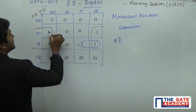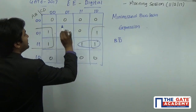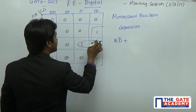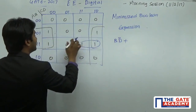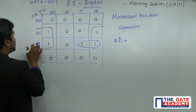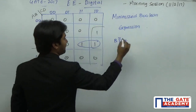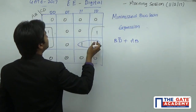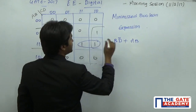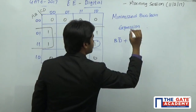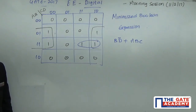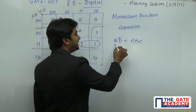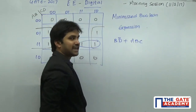So b·d̄, and for this particular duet group, a and b are constant, giving a·b, and here we are also going to have c. So the minimized Boolean expression is going to be b·d̄ + a·b·c.